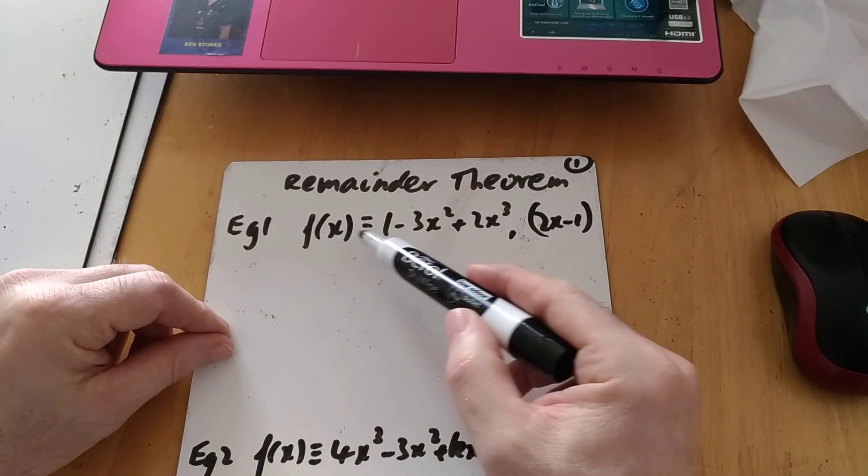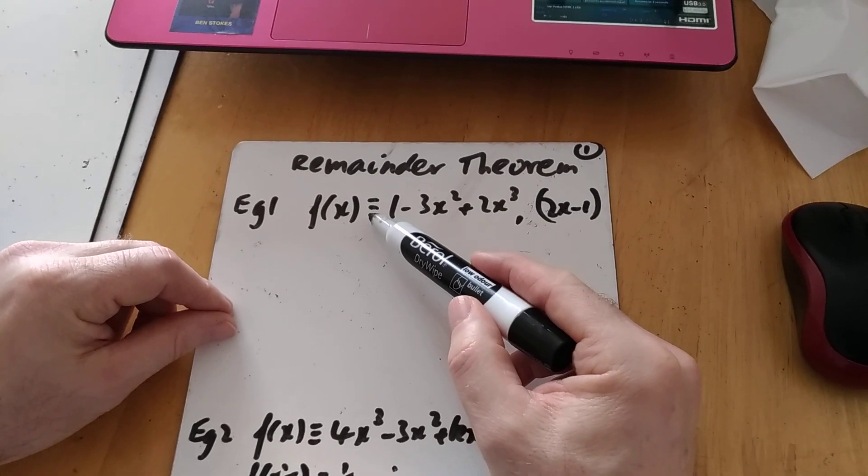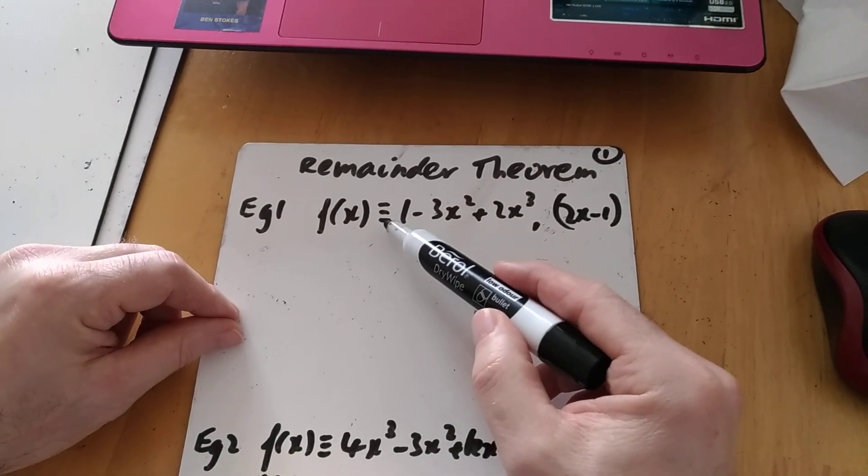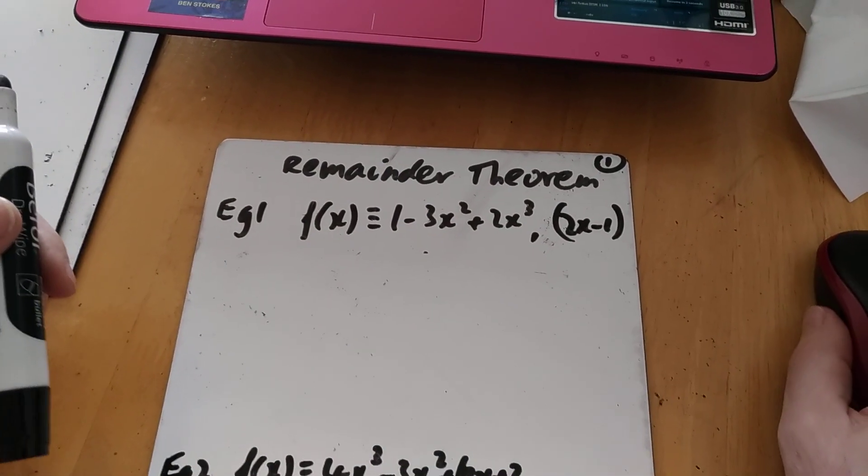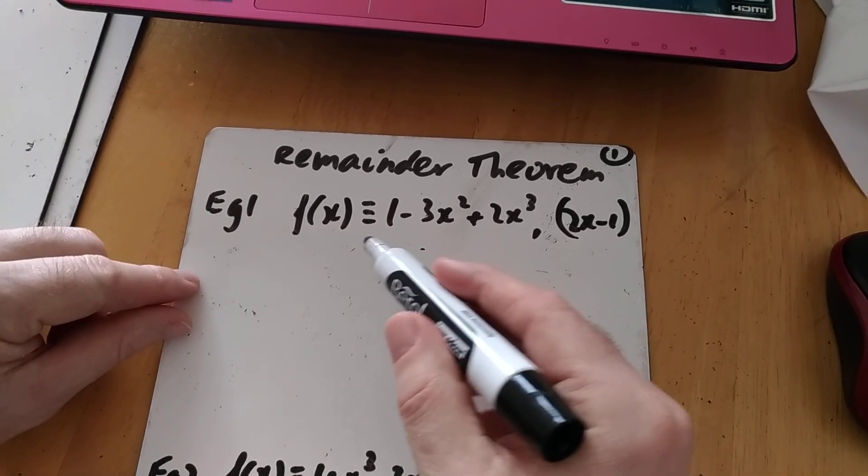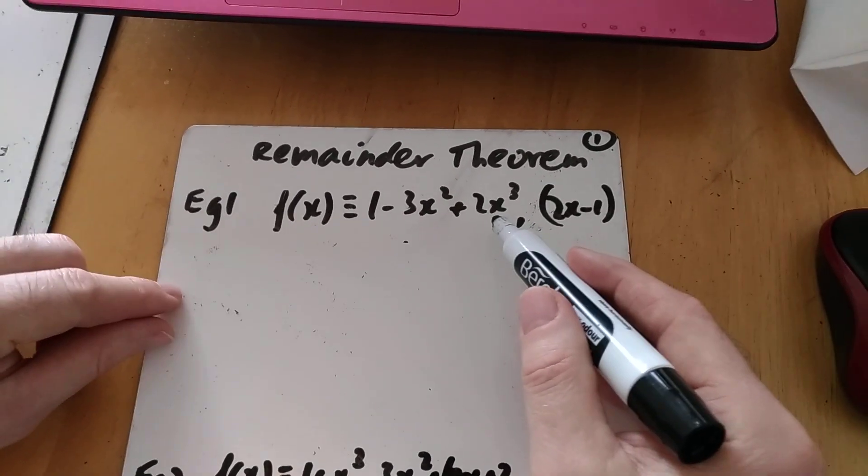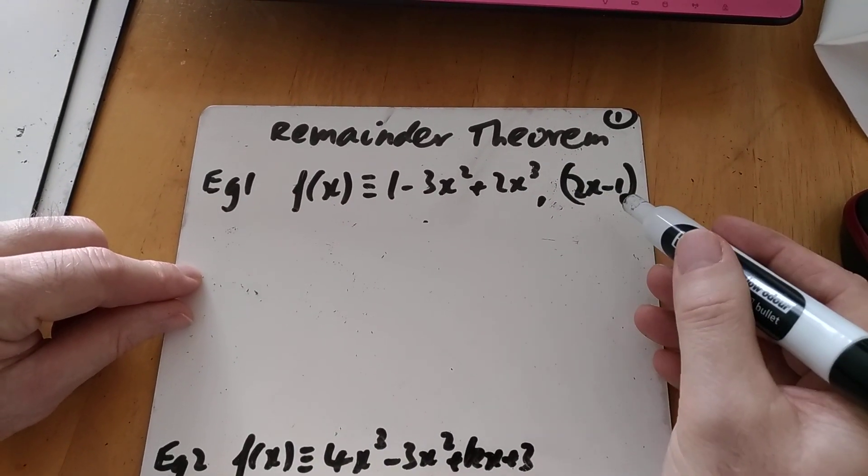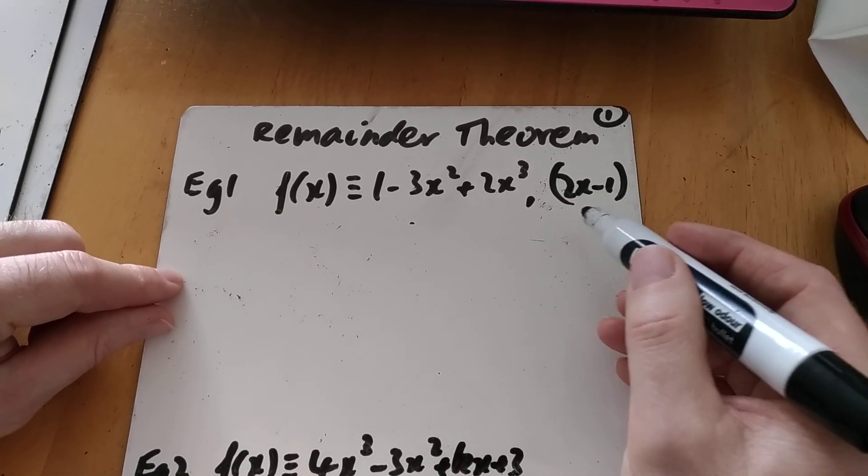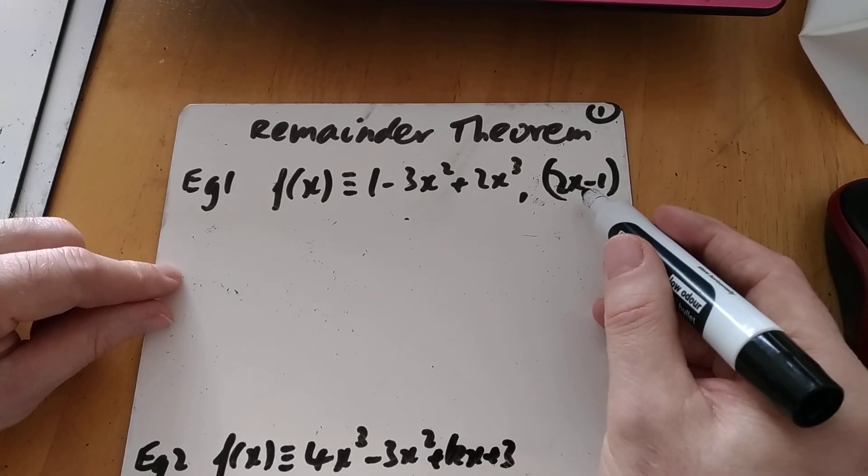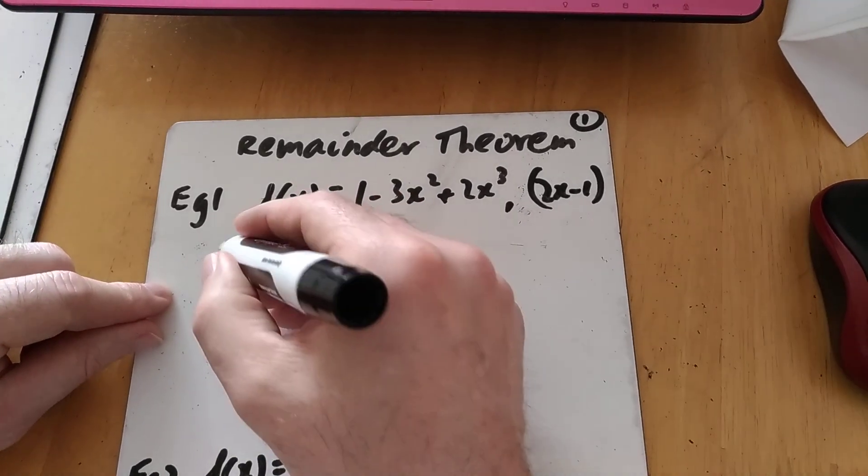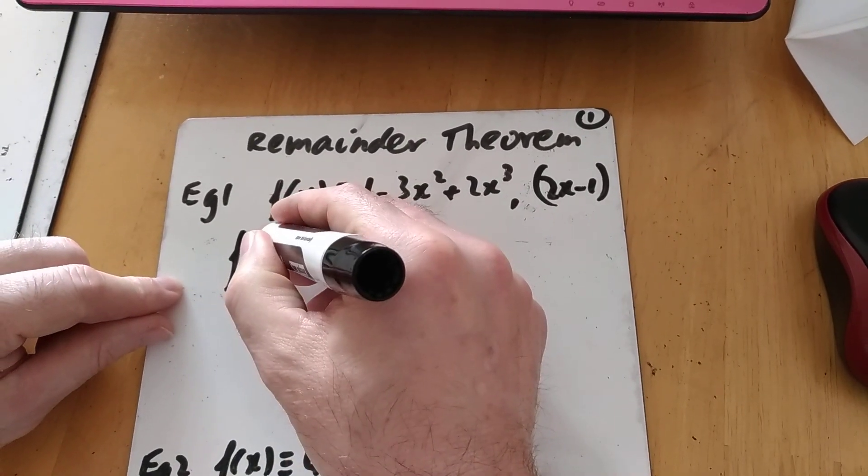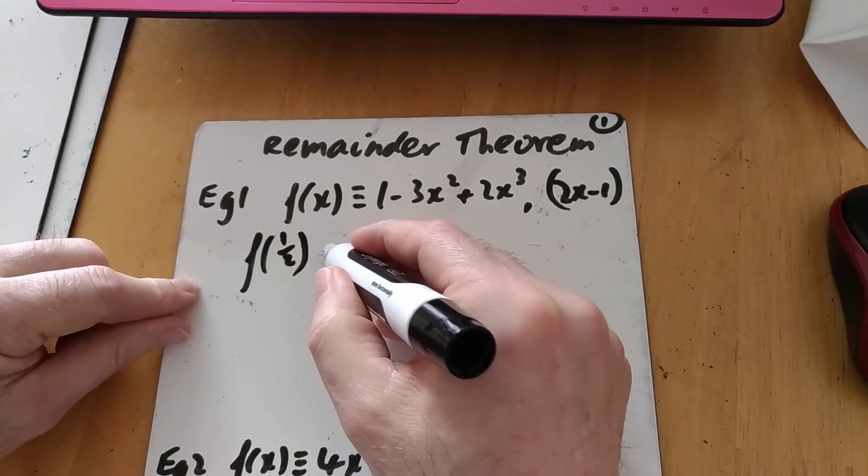For example, it says find the remainder when the polynomial f(x), this cubic, is divided by 2x minus 1. So let's have a look at how it's done. First things first, it's an identity true for all values of x, so I've got the three lines rather than two. When I start sticking values in, I'm working on a particular answer, and then I'll change to the equals. If you divide it by 2x minus 1, the x value that makes the bracket equal to 0 is a half.